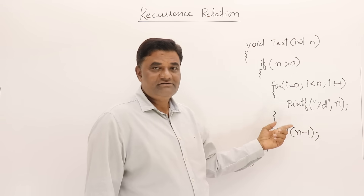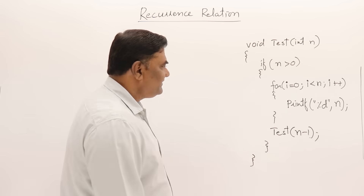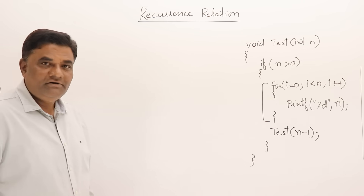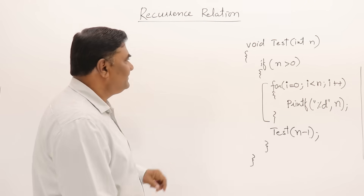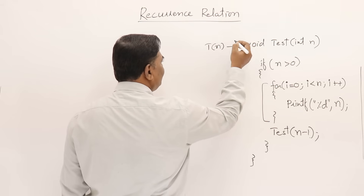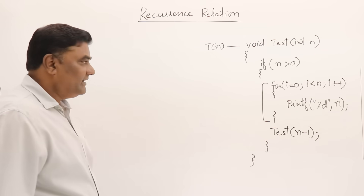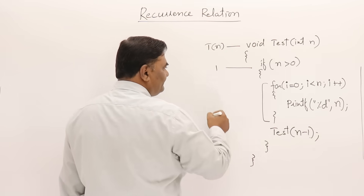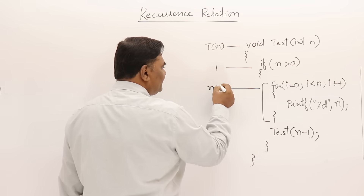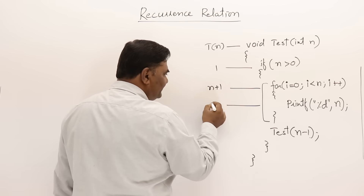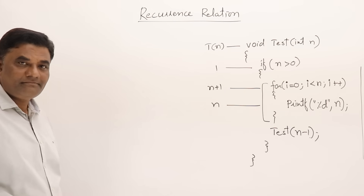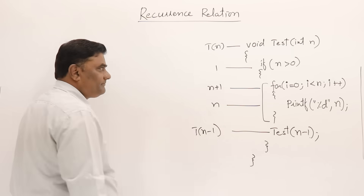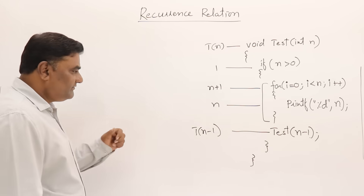Here I have a recursive function. When n is passed, it is calling itself for n minus 1, and inside this there is a for loop. Let us find out the time — this takes T(n) time. The condition takes one unit of time, the for loop runs n+1 times so whatever is inside will execute for n times.